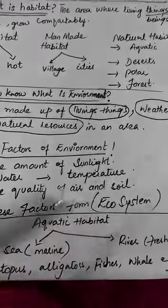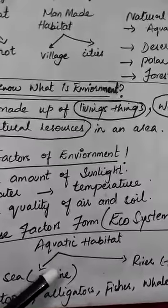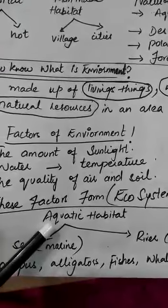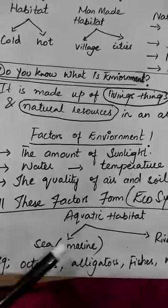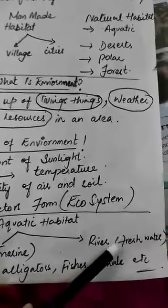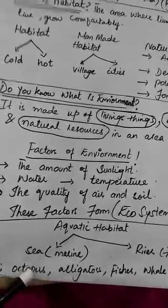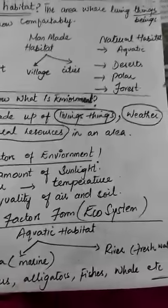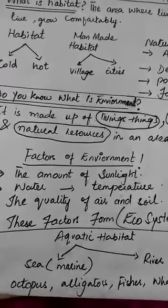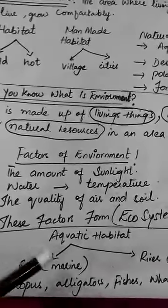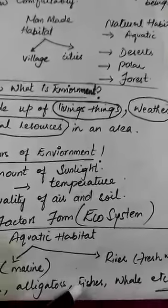یہ تمام factors مل کر ecosystem یعنی محولیاتی نظام بناتے ہیں۔ آج جو ہم نے aquatic habitat پڑھا، وہ پانی میں مخلوقات کے لیے بنی ہوئی قدرتی جگہ ہے۔ سمندر کے habitat کو marine بھی بولتے ہیں اور دریاؤں کو fresh water کہتے ہیں کیونکہ دریاؤں کا پانی بہتا رہتا ہے۔ اس کی مثالوں میں octopus، alligator، fish، اور whales شامل ہیں — کچھ aquatic جانور land اور water دونوں پر رہتے ہیں۔